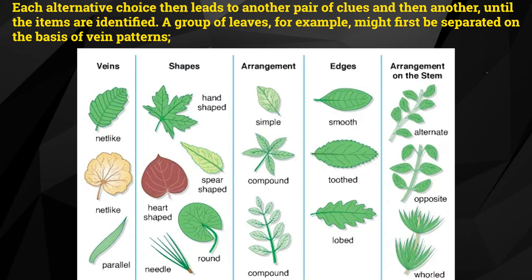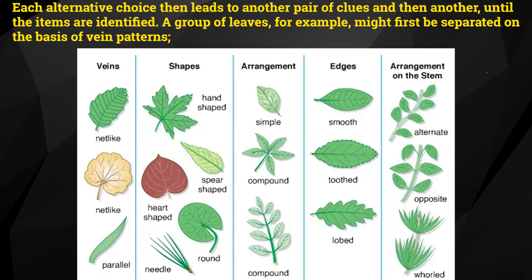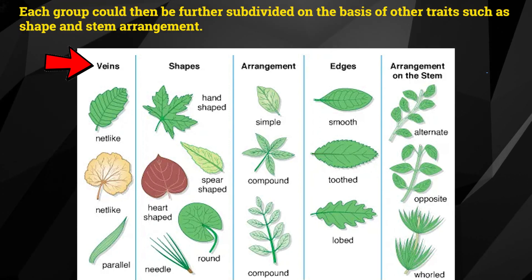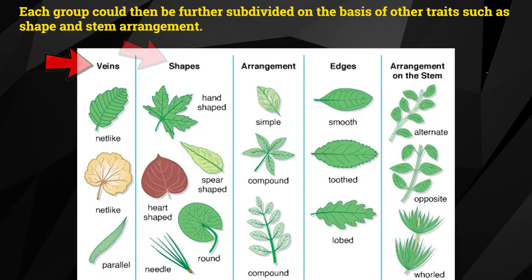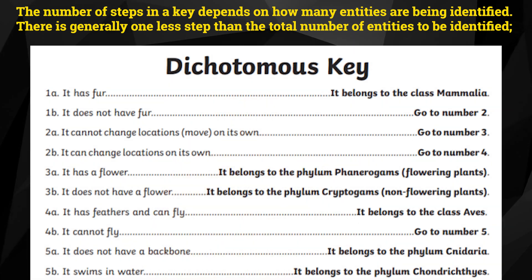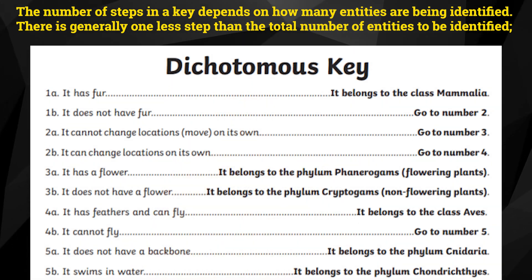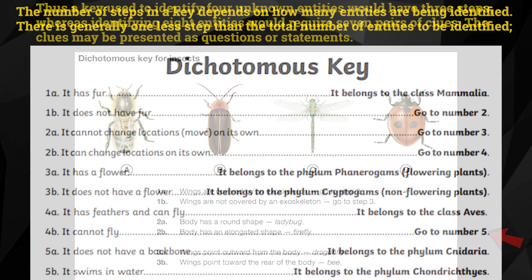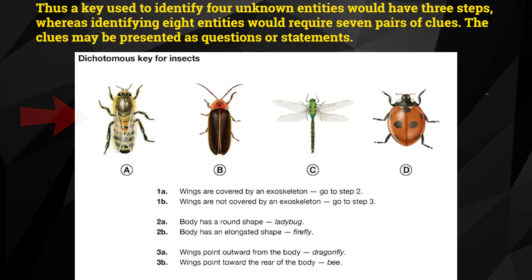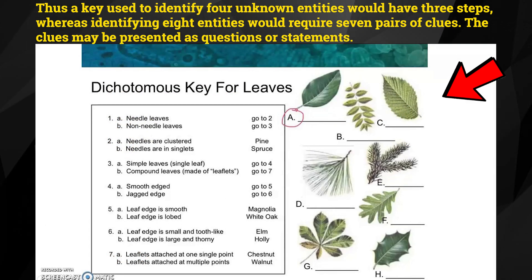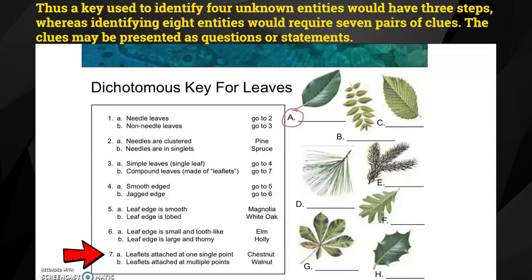A group of leaves, for example, might first be separated on the basis of vein patterns. Each group could then be further subdivided on the basis of other traits such as shape and stem arrangement. The number of steps in a key depends on how many entities are being identified — generally one less step than the total number of entities. Thus, a key used to identify four unknown entities would have three steps, whereas identifying eight entities would require seven pairs of clues.